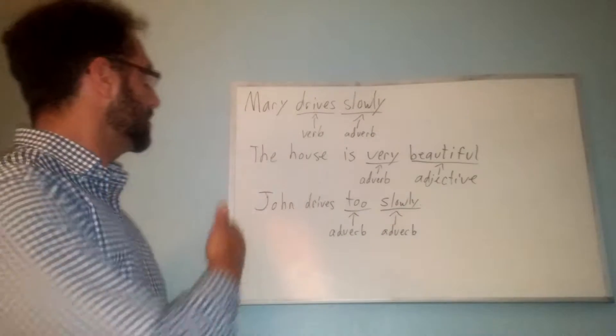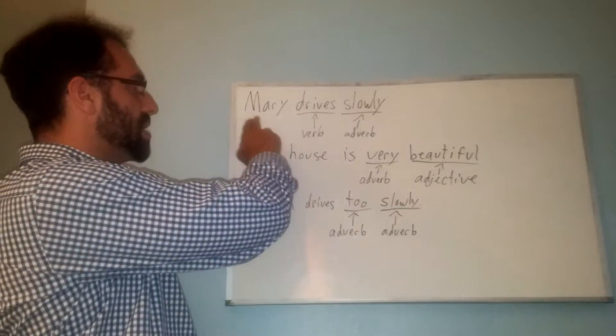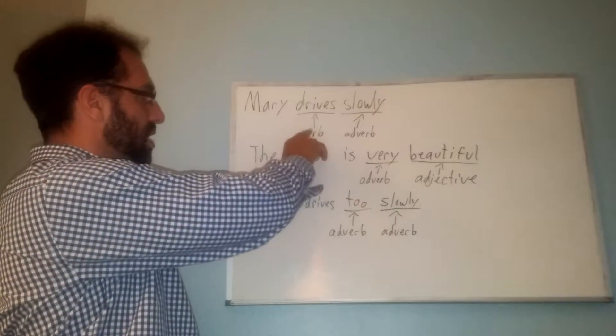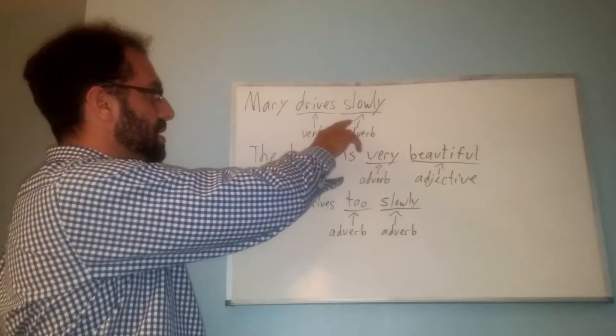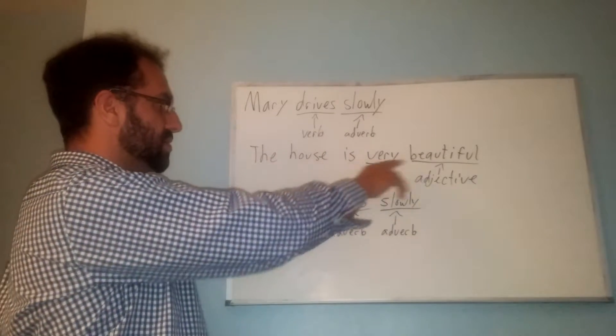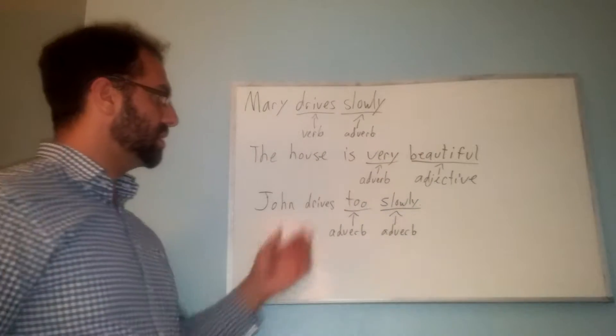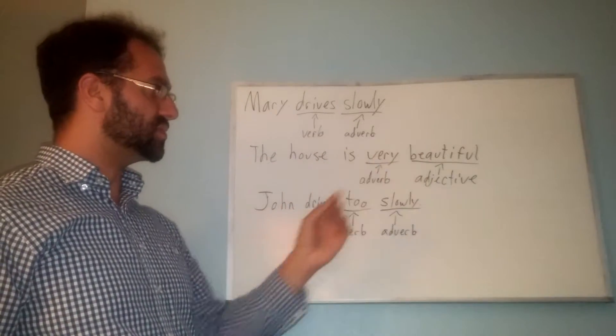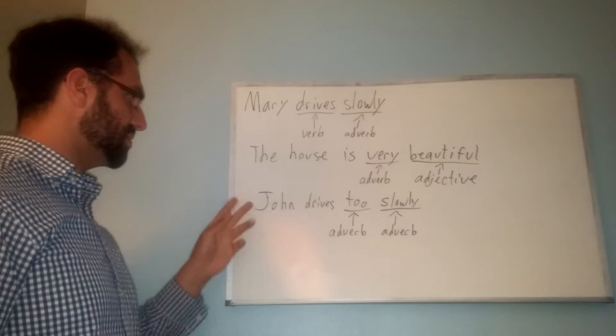For instance, we have "Mary drives slowly." Drives is a verb, and slowly is an adverb. "The house is very beautiful." Very is an adverb, and beautiful is an adjective.